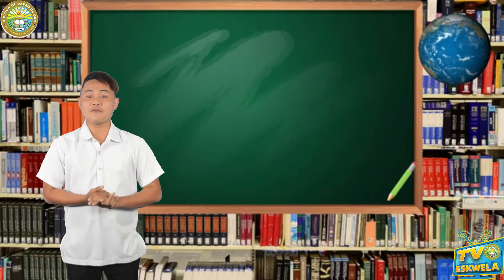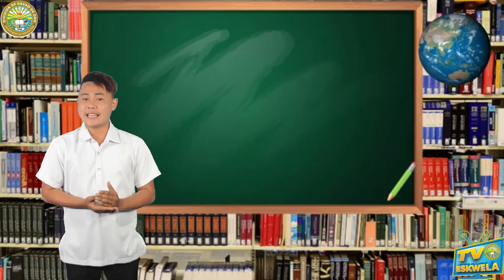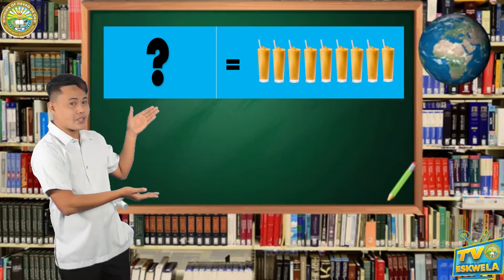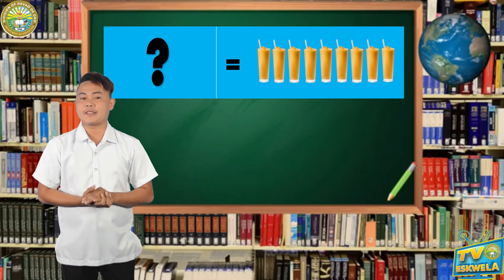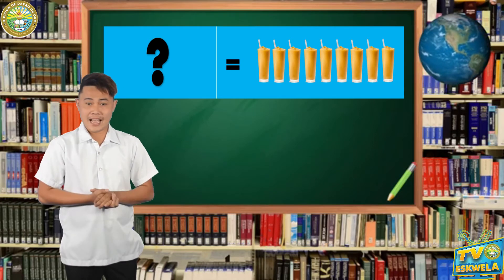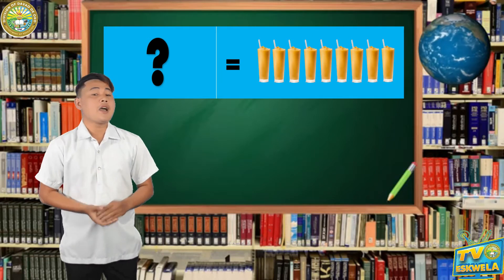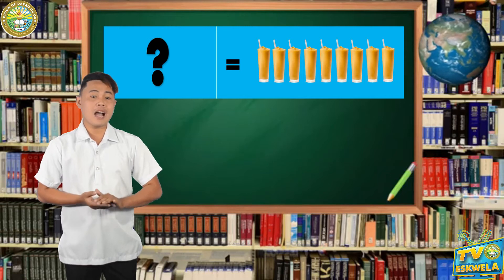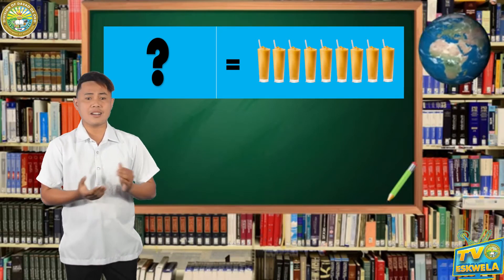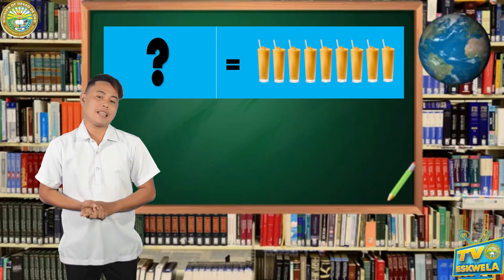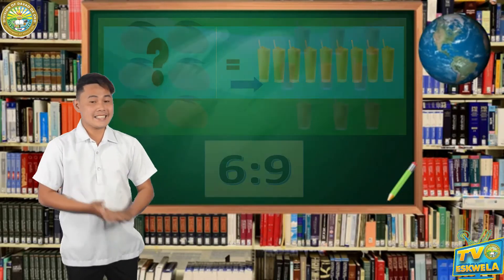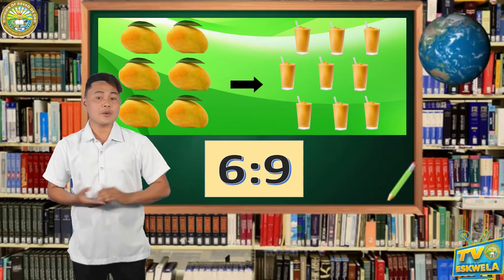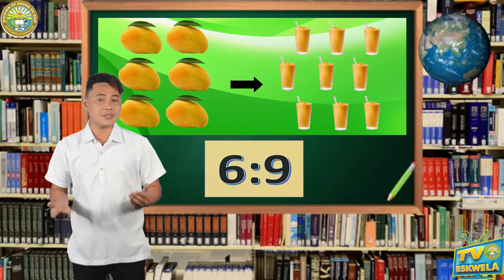And now, let us find the number of ripe mangoes needed to make 9 glasses of mango shake. Study this illustration. Based on the illustration, what is the ratio of the number of mangoes needed to the number of glasses of mango shake? Very good! It is 6 is to 9. This means that mother needs 6 ripe mangoes to make 9 glasses of mango shake.